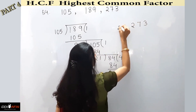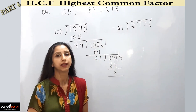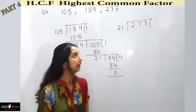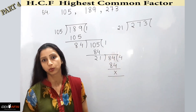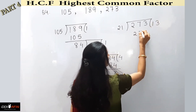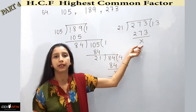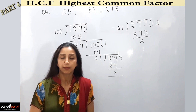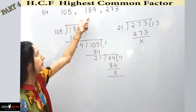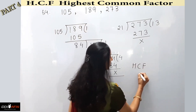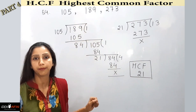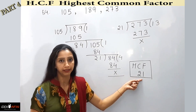Now I check 21 against 273: 21 times 13 is 273, so the remainder is 0. The HCF of all three numbers is 21. However, our question asks for the number which when increased by 3 is divisible — so the required number is 21 minus 3, which equals 18.